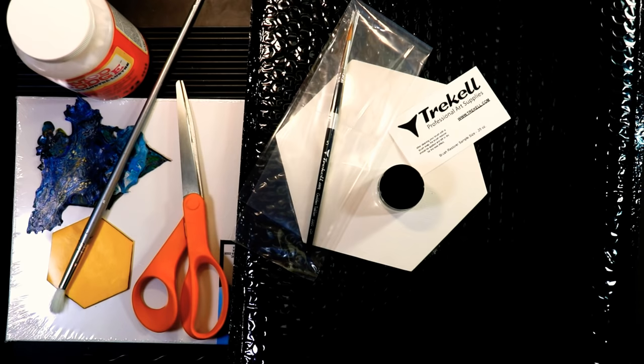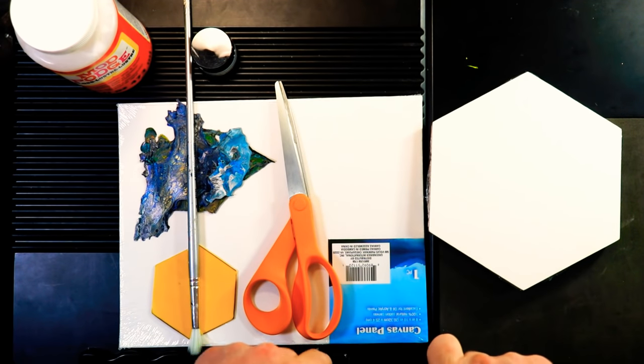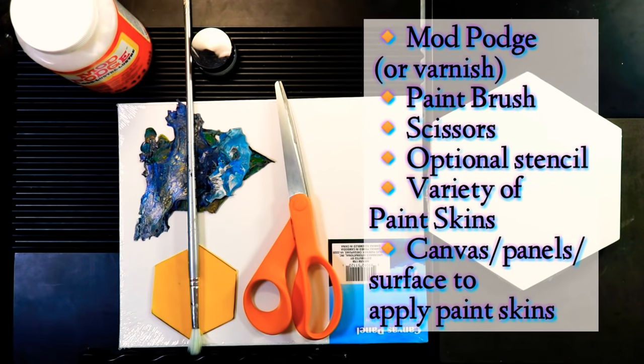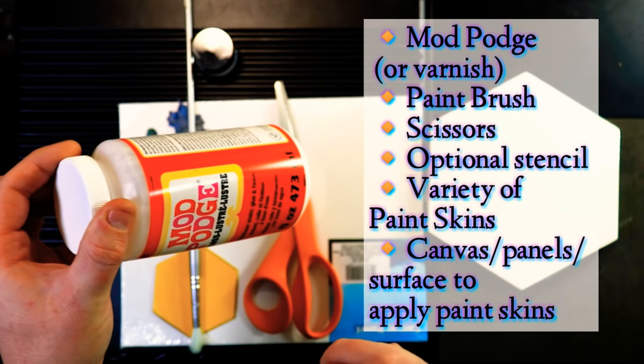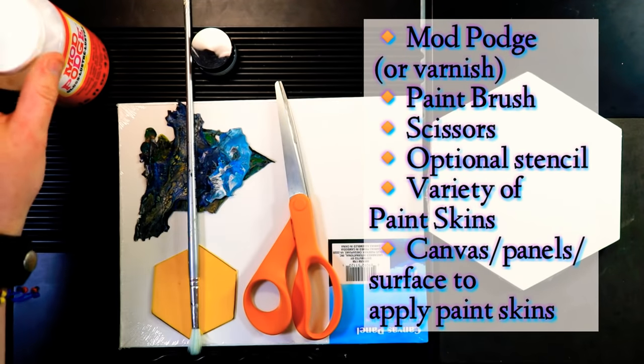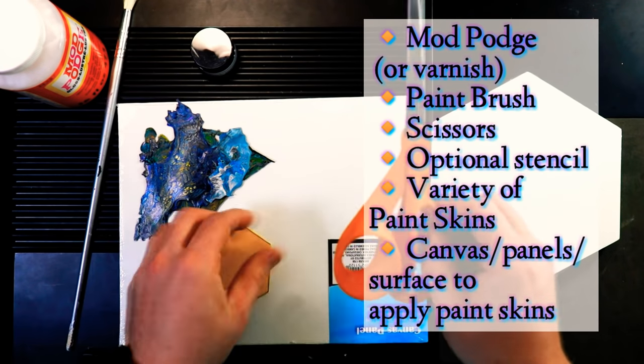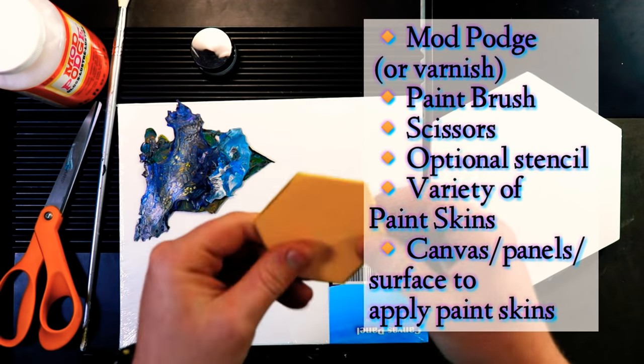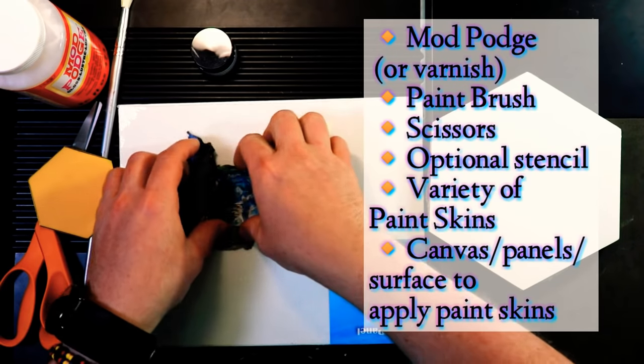Let's get the stuff out of the way and talk about our actual project today. Before we start, I want you guys to pause the video and go and grab these items. Starting with Mod Podge, Liquitex varnish, any of your clear varnishes will work. I'm using the Mod Podge today. You will need a brush for the Mod Podge. A pair of scissors. You don't need a stencil, but stencils are optional.